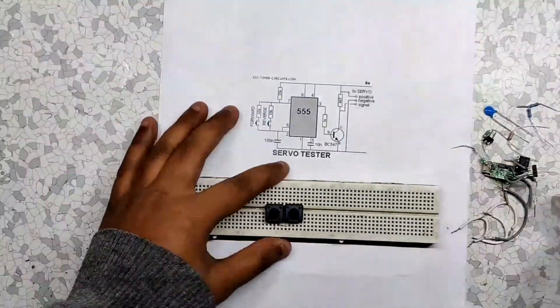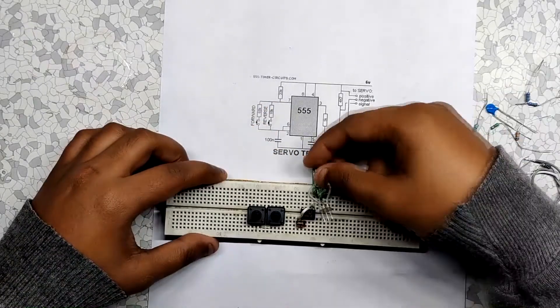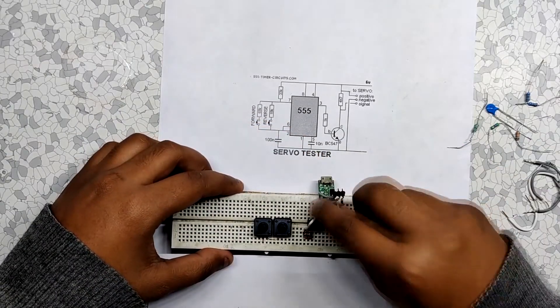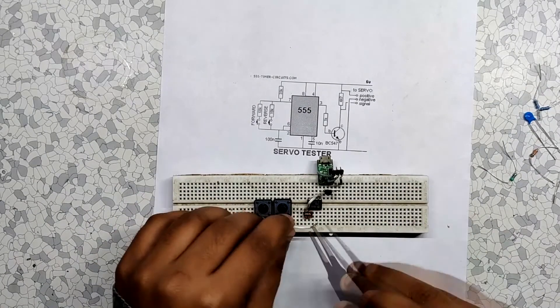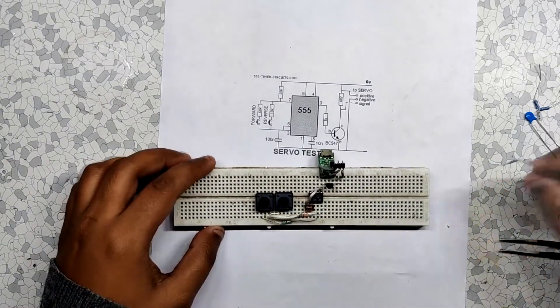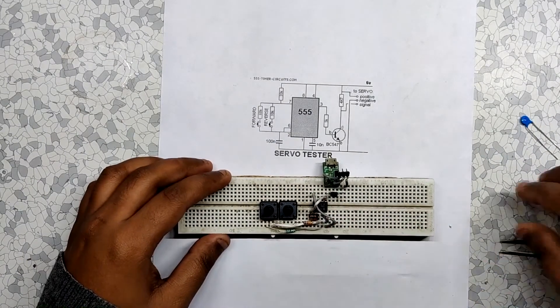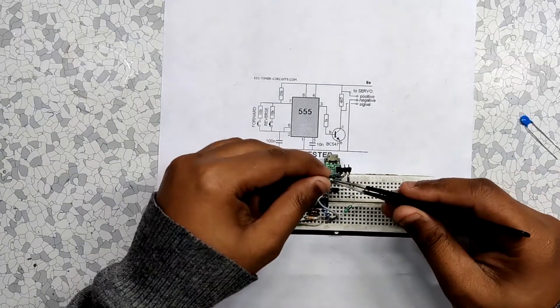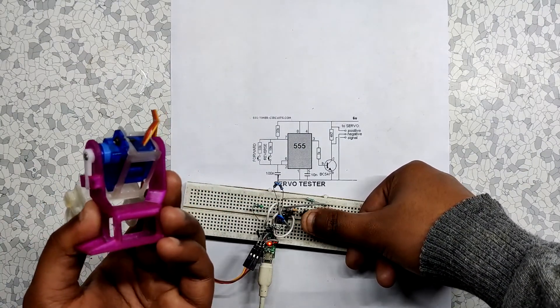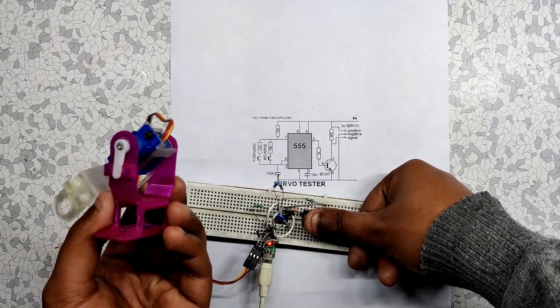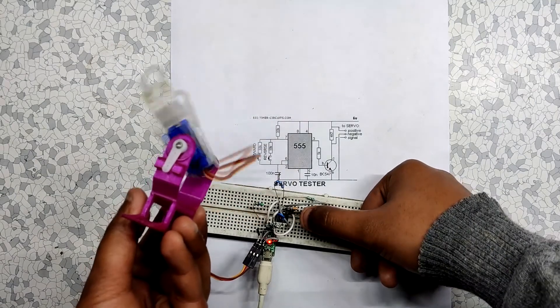Now let's just assemble everything. And it's done, just like that. Well, in short, we just need to add these components one by one on this breadboard according to the given schematic. By using this schematic, we can even prepare a PCB for making our own DIY servo tester.